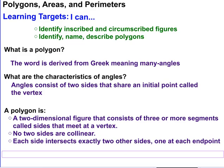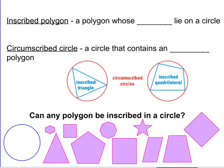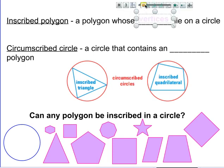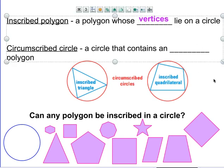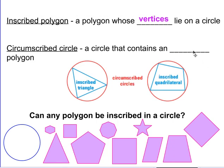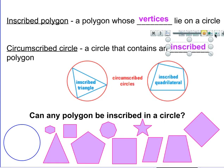So let's take a look at some figures. We can have inscribed polygons. Here, we have an inscribed triangle inside of the circle. So the circle is circumscribed. It's outside of our polygon. Here, we have an inscribed quadrilateral. And what do you notice? What you should notice is that the vertices of these polygons lie on the circle. So an inscribed polygon is a polygon whose vertices lie on a circle, and a circumscribed circle is a circle that contains an inscribed polygon.